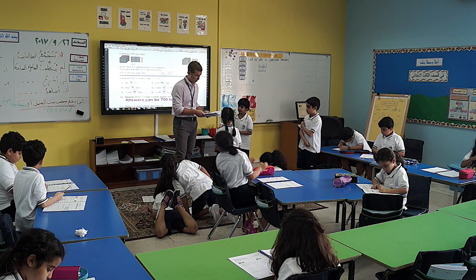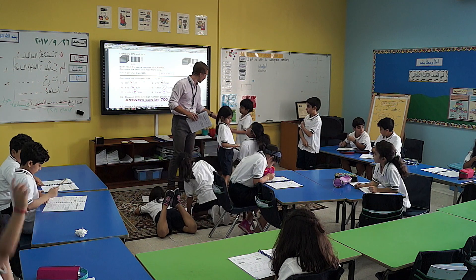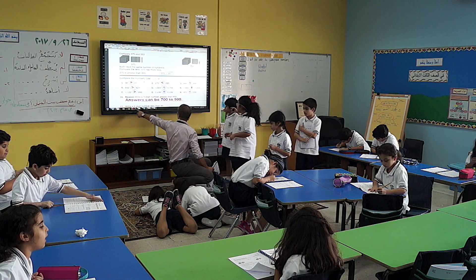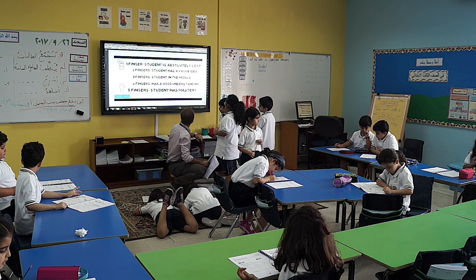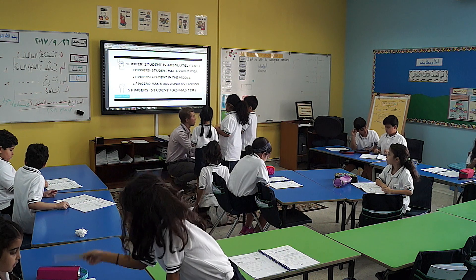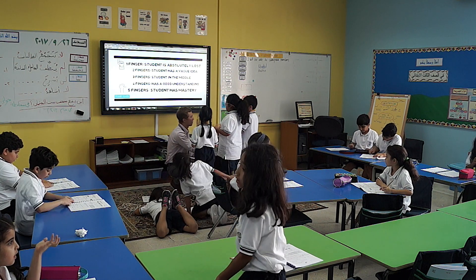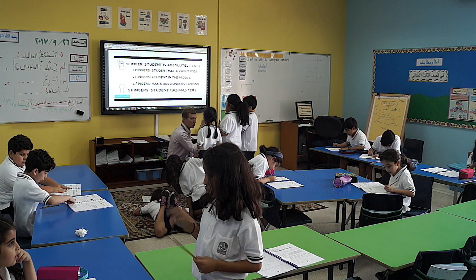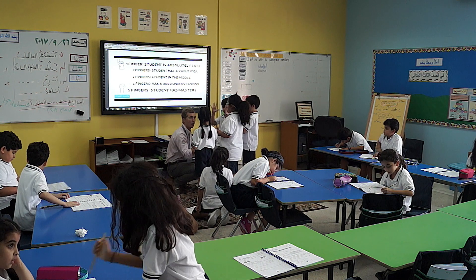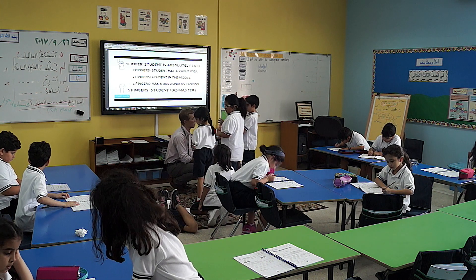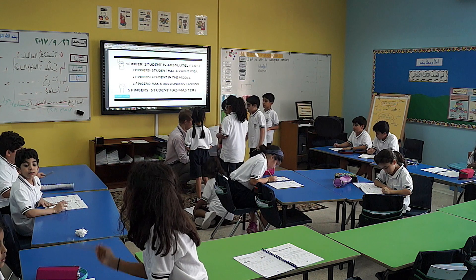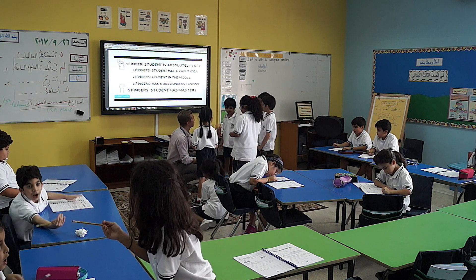I'm trying to get them to think about the five fingers again — redirecting them to the screen and asking where do you think you are now? Do you have one finger — a vague idea — or are you in the middle, or do you have five fingers? Some students showed five fingers, meaning they reached mastery. High five — you came here with zero or a vague idea and now you have mastery. That's the whole purpose of the differentiation that took place here.